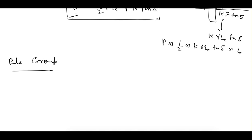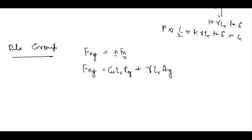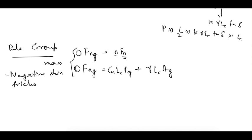For a pile group, the negative skin friction fng is calculated using two criteria: first, fng = n × fn (negative skin friction on a single pile multiplied by the number of piles); second, fng = cu × lc × pg + γ × lc × Ag. The maximum of these two values gives the negative skin friction for the pile group.